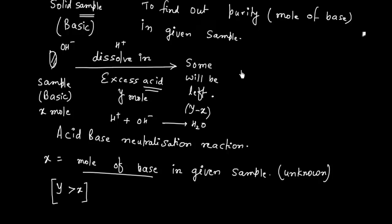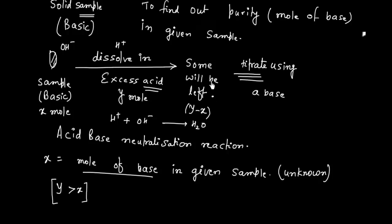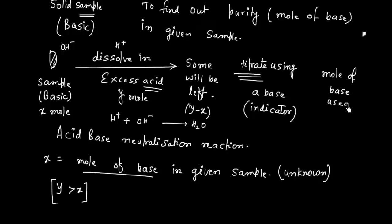Now what we do next is titrate the leftover acid using a base, and this time we use an indicator. So we can calculate the moles of base used. Let us say moles of base used is z, so z is the moles of base used.